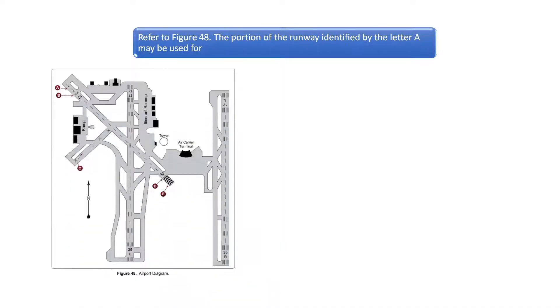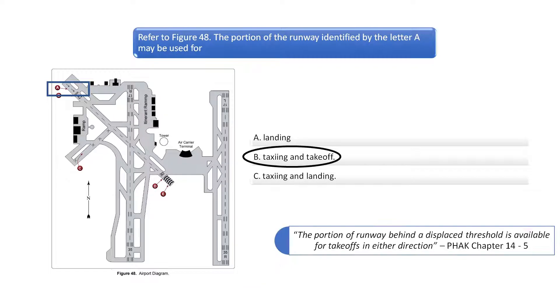Refer to Airport Diagram in Figure 48 on the left. The portion of the runway identified by the letter A may be used for... Section A in the Airport Diagram indicates a displaced threshold. According to the Pilot's Handbook of Aeronautical Knowledge, displaced thresholds may be used for takeoffs in either direction. They may also be used for landing in the opposite direction.